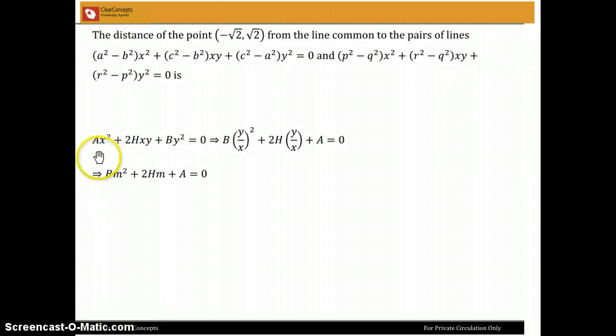So consider we have AX squared plus 2HXY plus BY squared equal to 0. You know we divided by X squared to get B times Y by X whole squared plus 2H times Y by X plus A equal to 0.